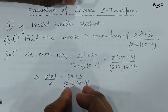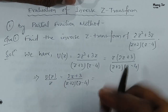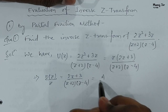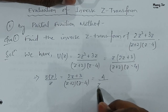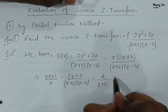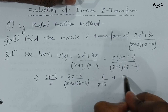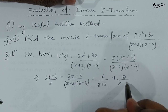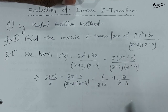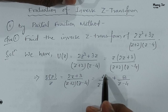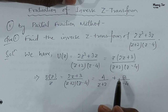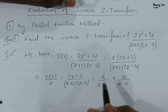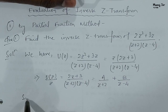Now we can write this using partial fractions as A/(z + 2) plus B/(z − 4). We will find the values of A and B by the partial fraction method.